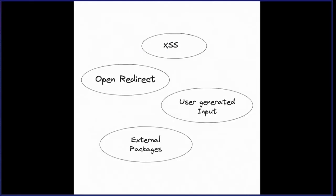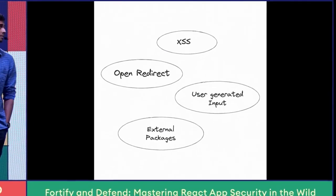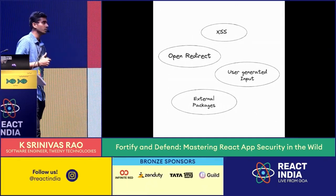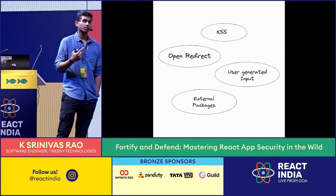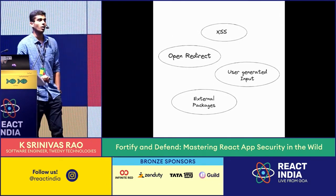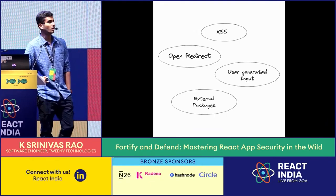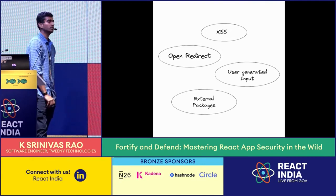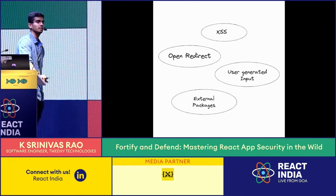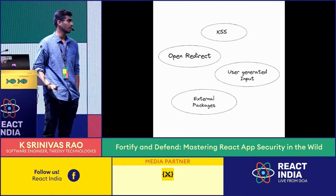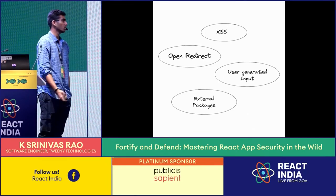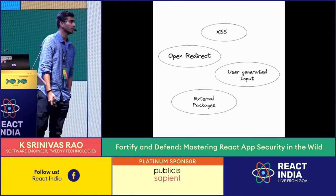We saw two examples of XSS and open redirect. What did we learn? Always be cautious when dealing with user inputs — that's where most vulnerabilities come from. Secondly, the packages we use in our projects are built by developers, not security experts. So always keep track of your dependencies, update them regularly, and if you have the bandwidth, look at sensitive areas of the codebase. Since most NPM packages are open source, you can see how they deal with user inputs, environment variables, and user credentials.